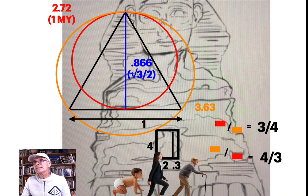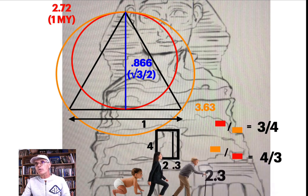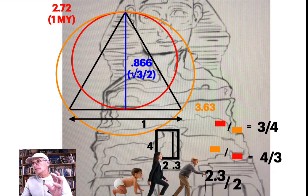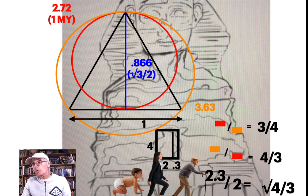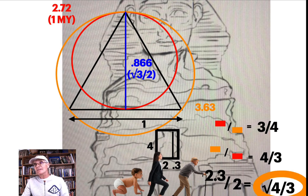Let's take the 2.3, the width, and divide it by that double square, just take the two. When you do that, you get the square root of four thirds. We're getting at the root of this central part of Egyptian math, the four thirds. There's a connection between the philosopher's stone and the keystone.